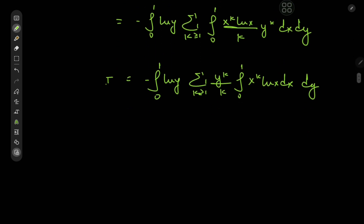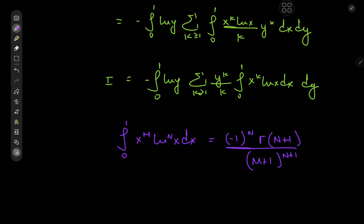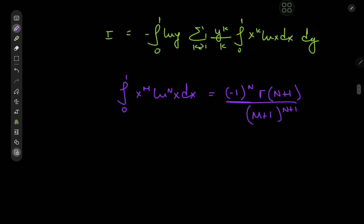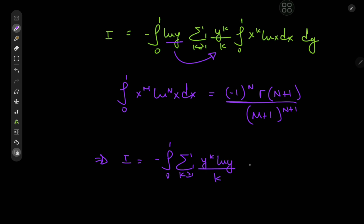This inner integral is pretty easy to solve. I have a result derived on my Instagram — linked in the description — where the integral from 0 to 1 of x^m times log^n(x) dx equals (−1)^n times Γ(n+1) divided by (m+1)^(n+1). In this case n = 1 and m = k, so the integral from 0 to 1 of x^k log x dx equals (−1)·Γ(2) / (k+1)² = −1/(k+1)². This gives us: negative integral from 0 to 1 of the sum over k of y^k times log y divided by k times (k+1)² dy.